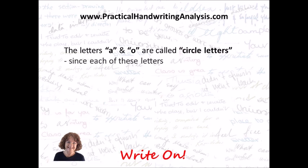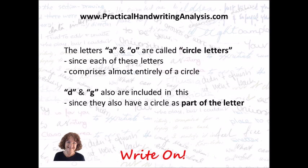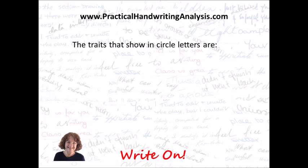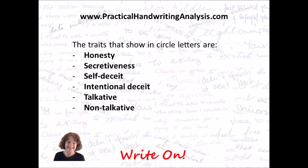The letters A and O are called circle letters since each of these letters comprises almost entirely of a circle. D and G are also included since they also have a circle as part of the letter. The traits that show in circle letters are honesty, secretiveness, self-deceit, intentional deceit, talkative, and non-talkative or reticent.